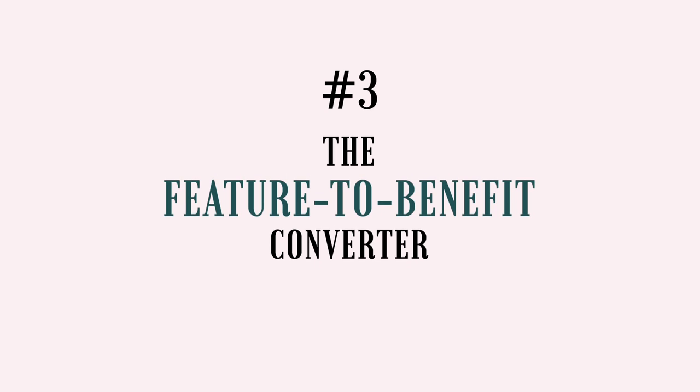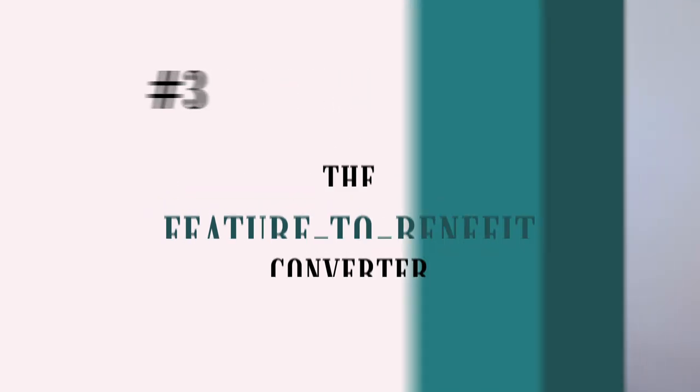Now let's move on to number three: the Feature to Benefit Converter. Let's say you need to write a sales page for a product that has a lot of features, parts, or steps to highlight. A good place to start is to list out all of the features or parts your product has, or the complete step-by-step framework if it's a digital program — but you don't want to stop there.